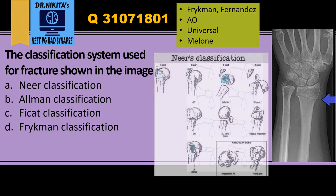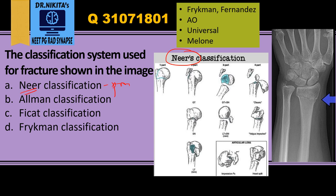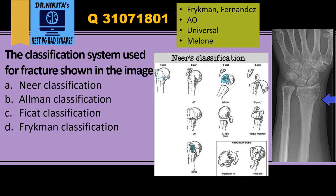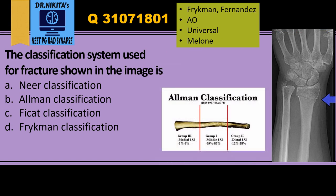Looking at the other options: Neer classification is used for proximal humerus. To remember this — 'Neer' is for humerus, and we spell it as 'humerus' — Neer, Nikita's, Radsyn, apes — all relate to humerus, which makes it easy to remember. So Neer classification is for proximal humerus.